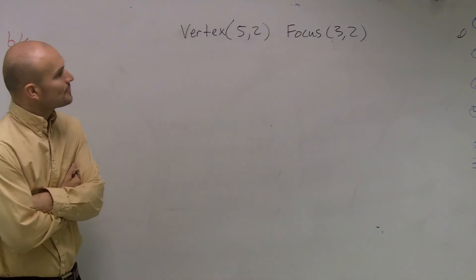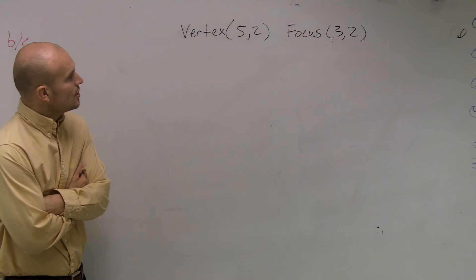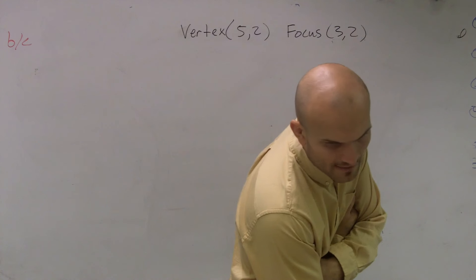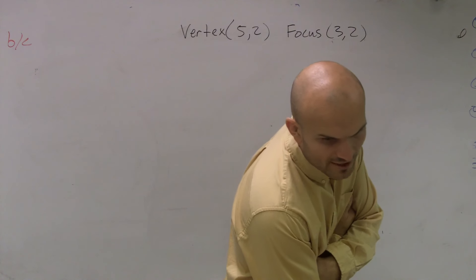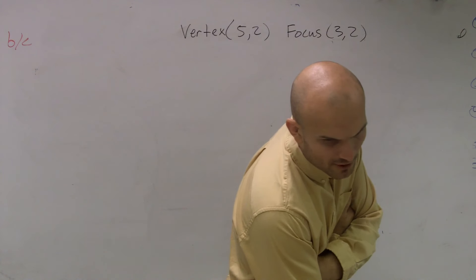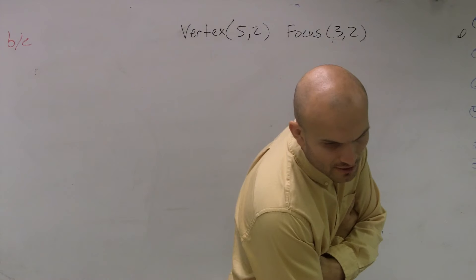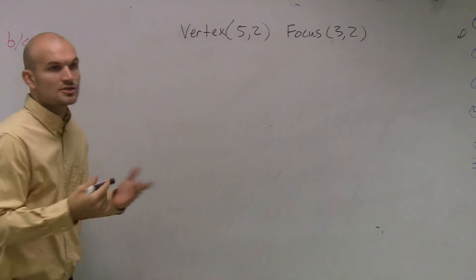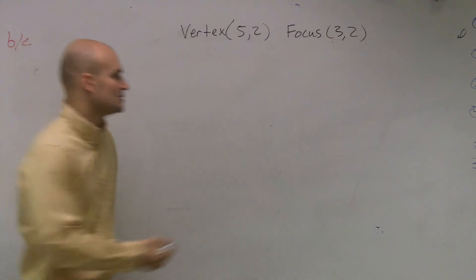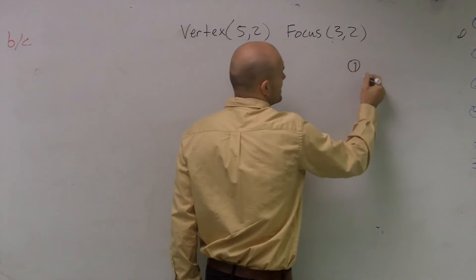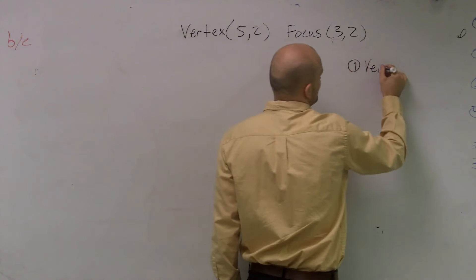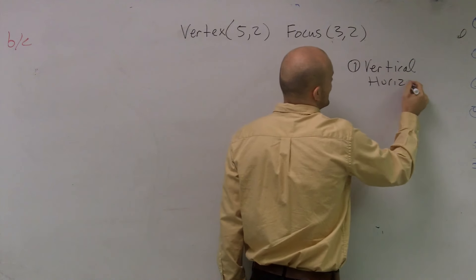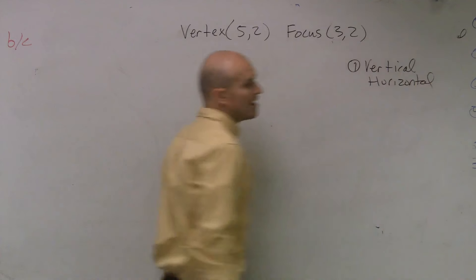Next problem: find the standard form of the equation of the parabola where the vertex is (5, 2) and the focus is at (3, 2). The first thing we need to determine is whether this is a vertical or a horizontal parabola. We need to figure this out, so let's plot what we're given.